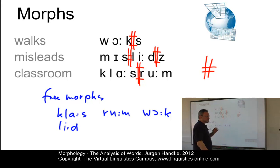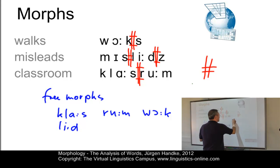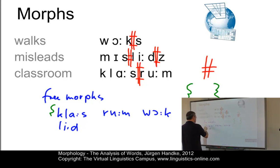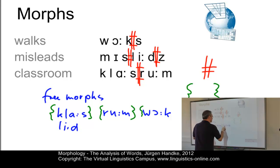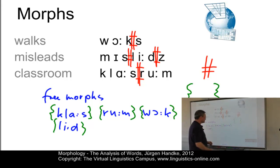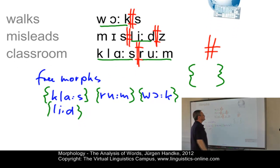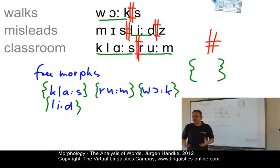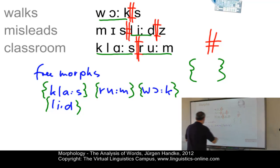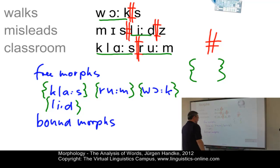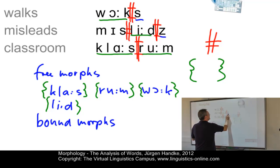The results of morphological analysis are first of all morphs. Morphs are indicated by curly brackets in linguistics, so to be absolutely precise, I have to put curly brackets around my free morphs. The others are bound morphs — they cannot stand on their own and must be attached to other elements. So we have a set called bound morphs.